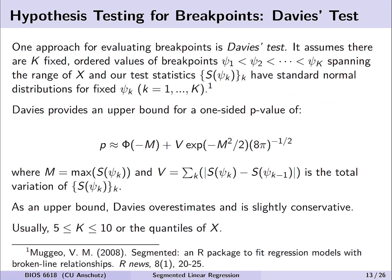This approach is known as Davies' test. It assumes k fixed ordered values of breakpoints psi 1 through psi k spanning the range of the predictor x, and calculates test statistics S(psi k) with standard normal distributions. Davies' test provides an upper bound of a one-sided p-value, using an approximate connection between the CDF of a normal distribution and the total variation among test statistics. Importantly, Davies' test will slightly overestimate the p-value — it's conservative.